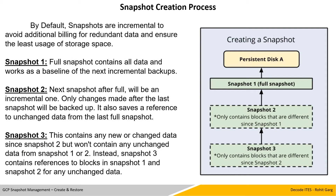Snapshot creation process. By default, snapshots are incremental to avoid additional billing for redundant data and ensure least usage of storage space. Let's consider an example and see how snapshot works. Snapshot 1 is the first snapshot of any disk and it will be the full one. A full snapshot contains all data and works as a baseline for next incremental backups. Snapshot 2, the next snapshot after the full, will be an incremental one — only changes made after the last snapshot will be backed up. It also saves a reference to unchanged data from the last full snapshot.